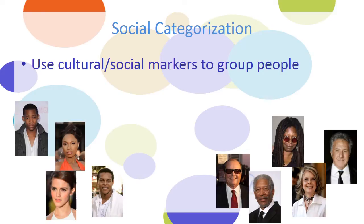We feel positively towards people that are in the in-group, and generally we feel negatively towards people that are in the out-group. Social categorization, which is this automatic tendency we have to categorize people, leads us to feeling like people are either in the in-group or the out-group, which contributes to inter-group bias.